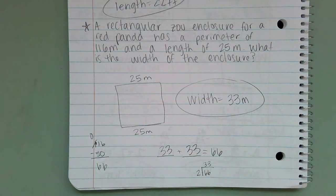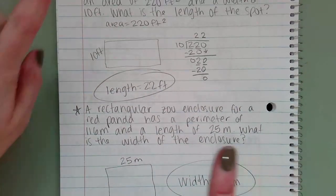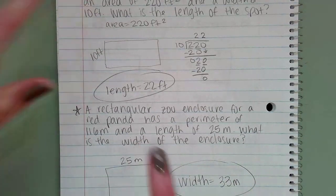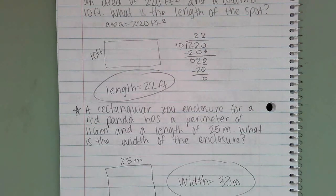And that is all. You'll have a couple of problems for figuring out the unknown area, a couple of problems for figuring out the unknown perimeter, and then one word problem for each — about five or six problems altogether. I know you guys can do it and you're going to do a great job.